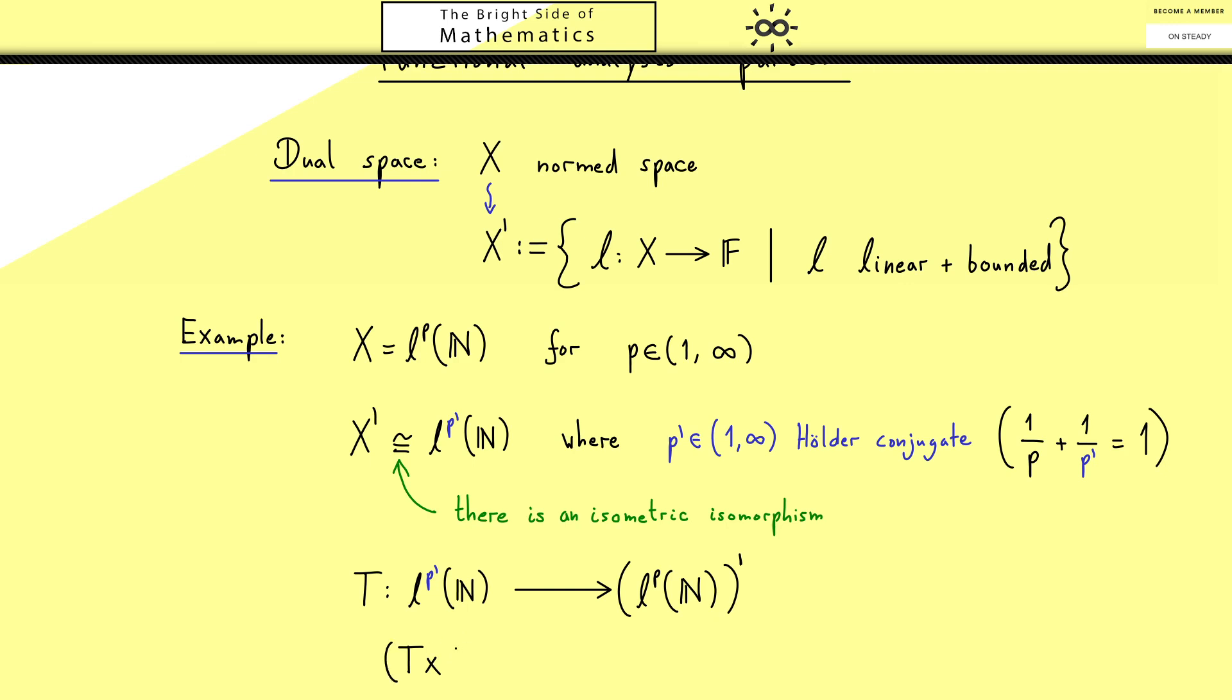For this let's call the sequence from LP prime just x and then Tx is a linear operator on LP. So we can put in a sequence from LP which we call y. Now comes the definition: we have the infinite sum, the series, and we put in xk times yk. This works as we will see soon mainly because we have our Holder inequality.